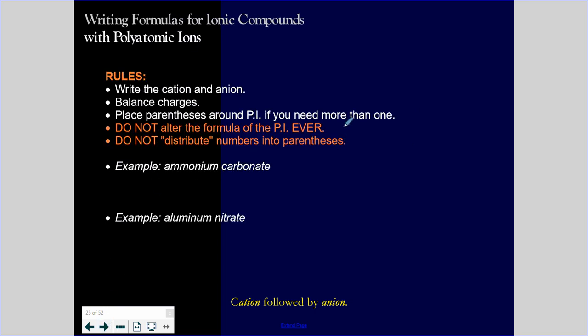So when writing formulas for ionic compounds with polyatomic ions, we're going to be given the chemical name, like for this existing example, ammonium carbonate. We're going to write the cation and the anion. Then we're going to balance charges. We're going to place parentheses around the PI. This is an abbreviation meaning polyatomic ion. And again, you know all these. You are an expert. If you need more than one copy of a polyatomic ion, you'll put it in parentheses and you'll put a two after. We'll talk about that when we get there.